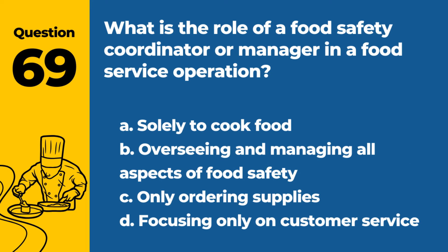Question 69. What is the role of a food safety coordinator or manager in a food service operation? a. Solely to cook food. b. Overseeing and managing all aspects of food safety. c. Only ordering supplies. d. Focusing only on customer service. Answer: b. Overseeing and managing all aspects of food safety. This role is crucial for ensuring overall food safety in the operation.